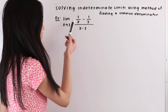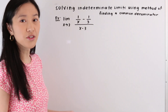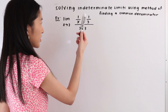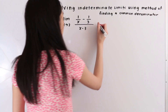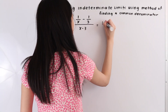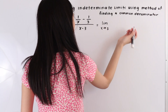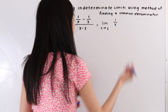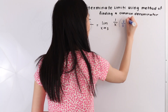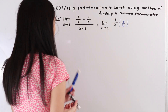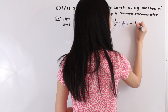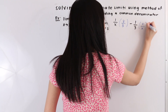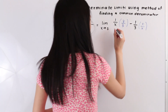So here we have this 1 over x minus 1 third in the numerator. What we're going to do is find a common denominator so that we can get these two fractions under one denominator. So we have the limit as x approaches 3 of 1 over x, and we're going to multiply this 1 over x by 3 over 3. And this is minus 1 third, and we're going to multiply this by x over x. And this is all over x minus 3.